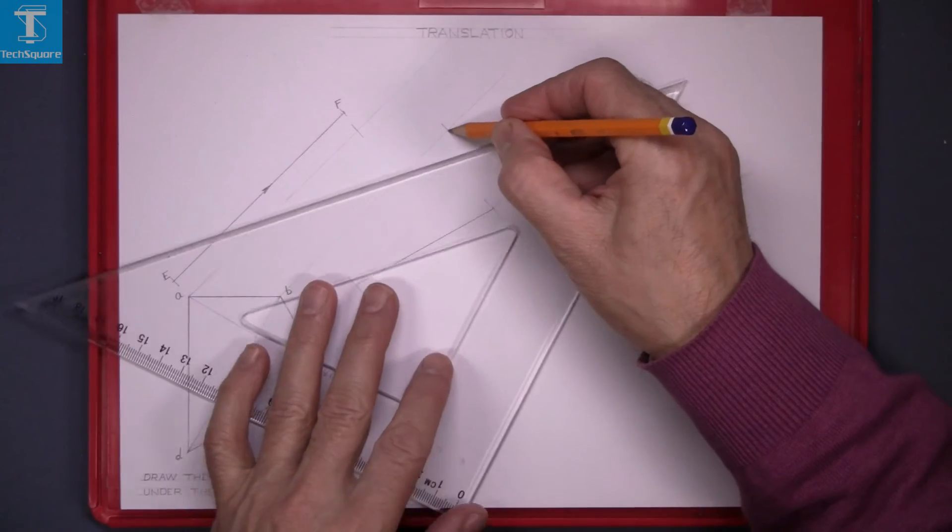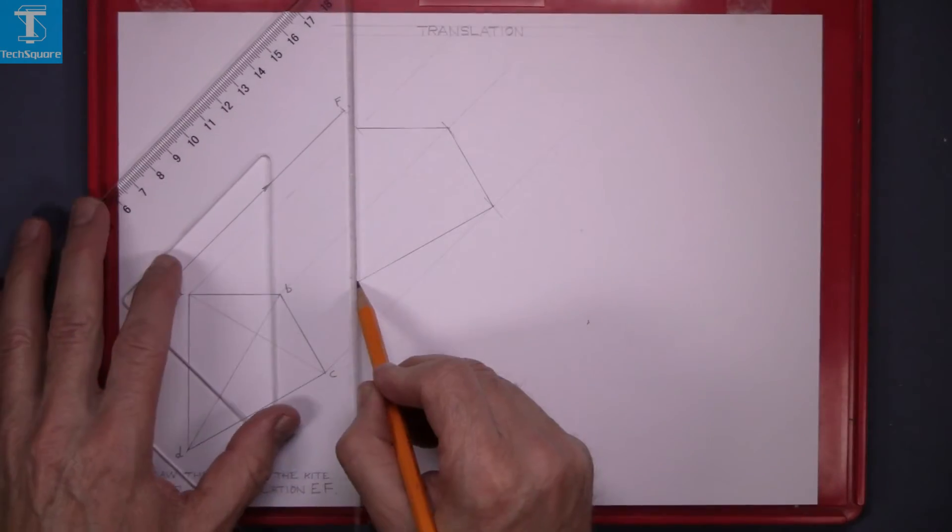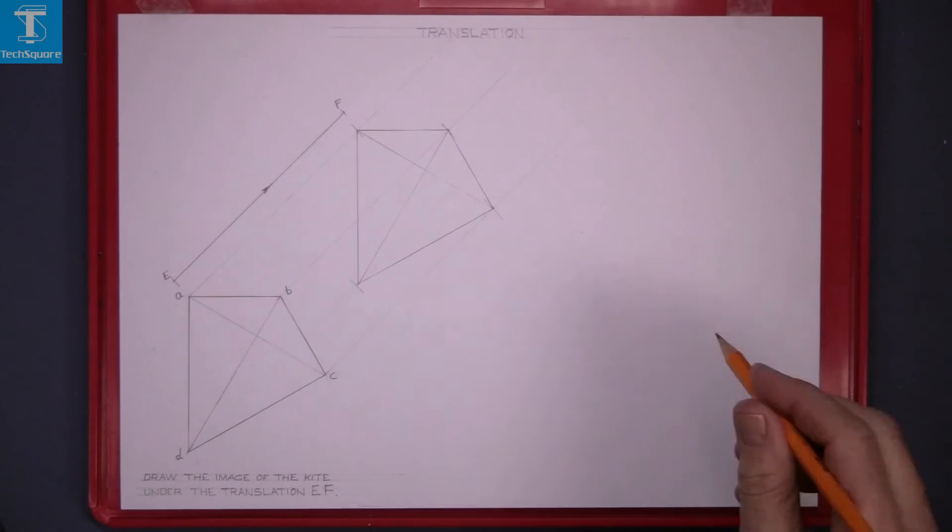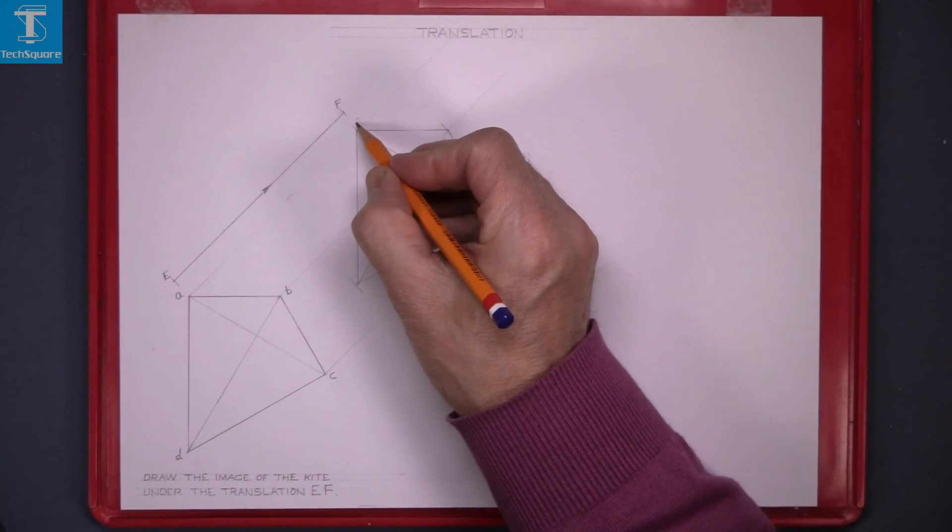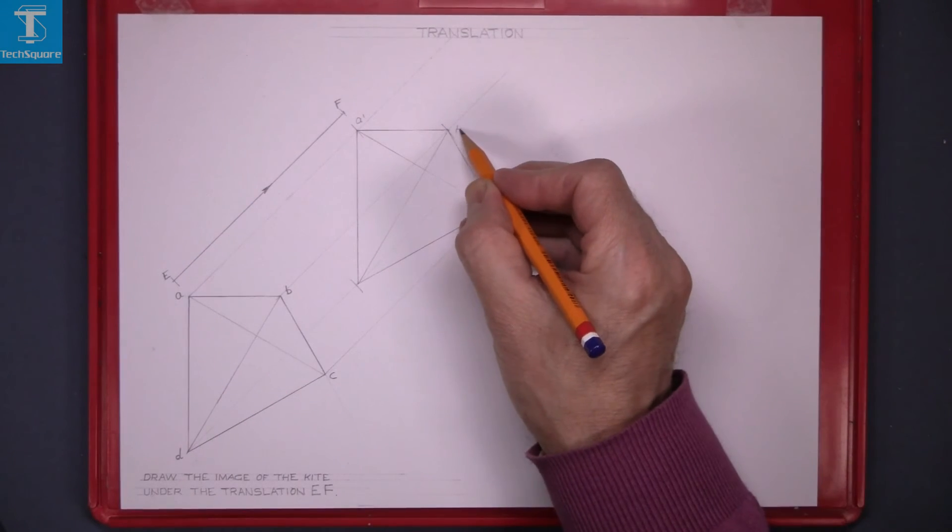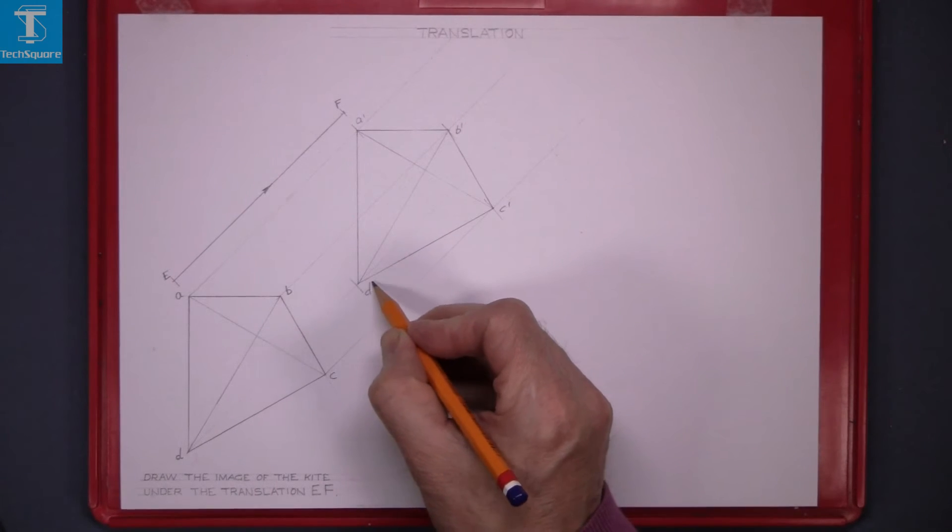And that is the translation under EF. In the new points A becomes A1 and B becomes B1 and so on.